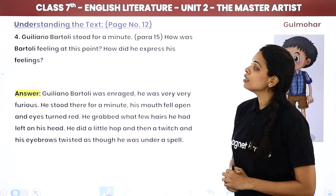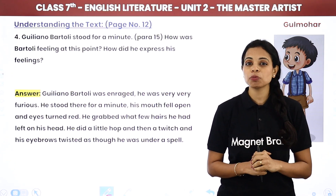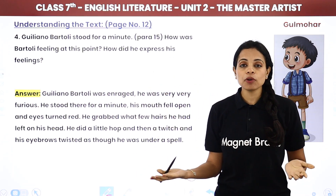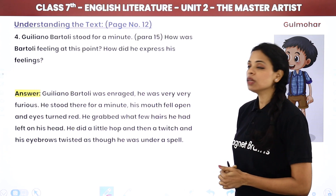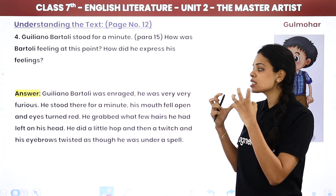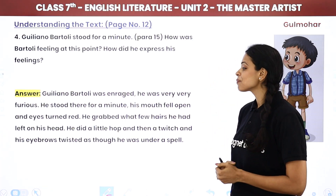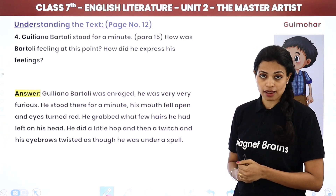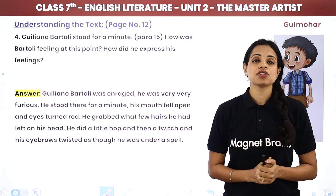The next question: Giuliano Bartoli stood for a minute — how was Bartoli feeling at this point, and how did he express his feelings? The moment he saw the portrait, he was extremely angry because he did not like the portrait at all. It was a different type of painting which didn't look beautiful. Bartoli was enraged — very, very furious. He stood there for a minute, his mouth fell open, his eyes turned red, he grabbed the few hairs he had left on his head, did a little hop, then a twitch, and his eyebrows twisted as though he was under a spell. He was extremely angry.